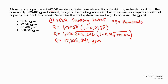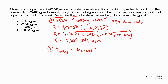But that's only the fire flow rate. We're asked in the problem statement to determine the total system demand. So the total system demand — Q_total — is equal to the normal demand, Q_normal, plus the fire flow emergency demand, Q_fire_flow.